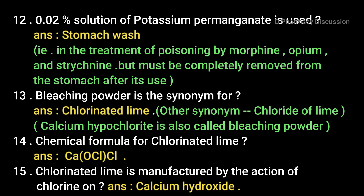Next question: 0.02% solution of potassium permanganate is used as a stomach wash in the treatment of poisoning by morphine, opium, and strychnine, but must be completely removed from the stomach after use. Bleaching powder is the synonym for chlorinated lime, also called chloride of lime. Chemical formula for chlorinated lime — answer CaOCl2. Chlorinated lime is manufactured by the action of chlorine on calcium hydroxide.